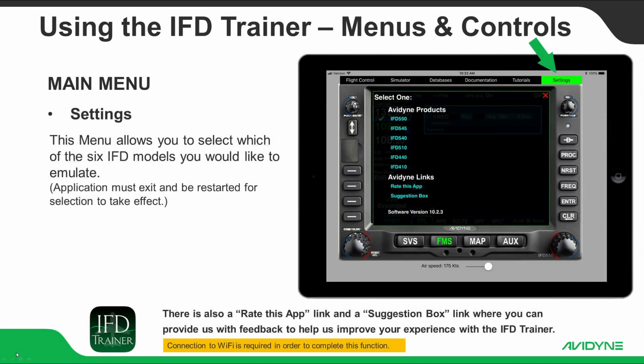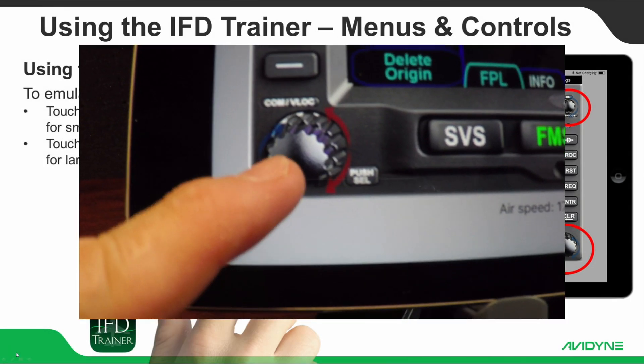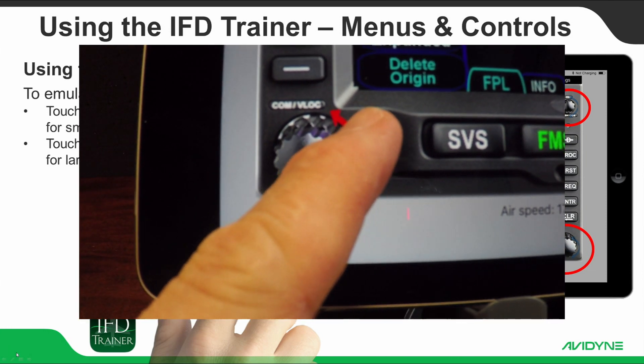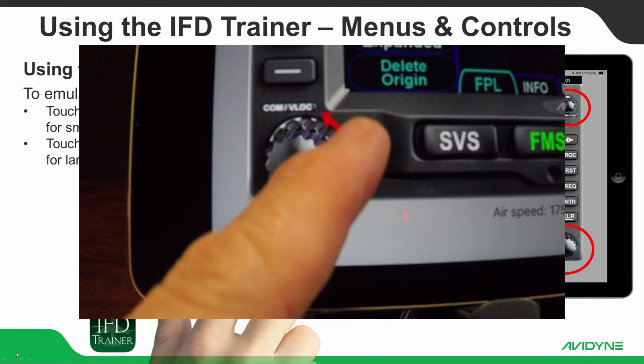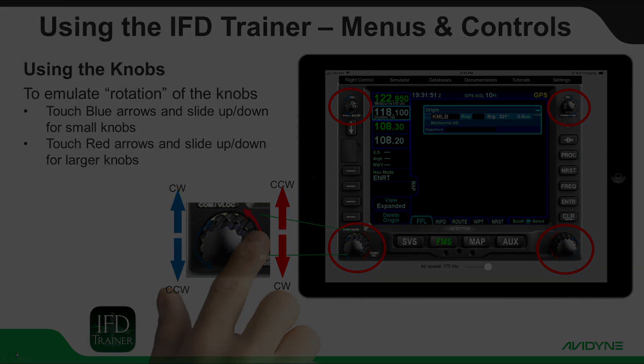Under the Settings menu, you can select which of the 6 IFD models you would like to emulate. The application must exit and be restarted for the selection to take effect. Finally, to emulate rotation of the knobs, touch the small blue arrows and slide up or down to rotate each of the small knobs. Touch the larger red arrows and slide up or down to rotate the larger knobs.